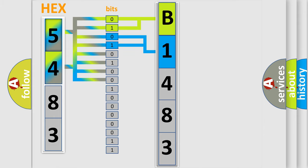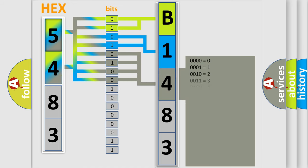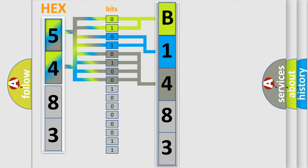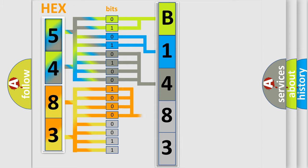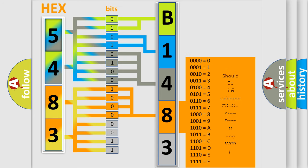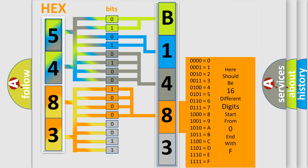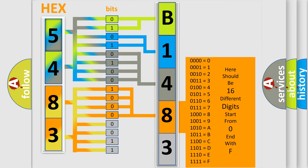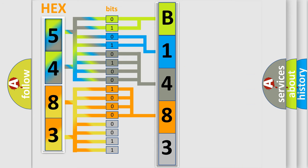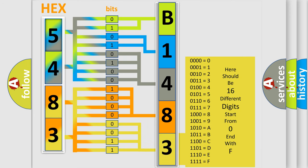A single byte conceals 256 possible combinations. We now know in what way the diagnostic tool translates the received information into a more comprehensible format. The number itself does not make sense to us if we cannot assign information about what it actually expresses.